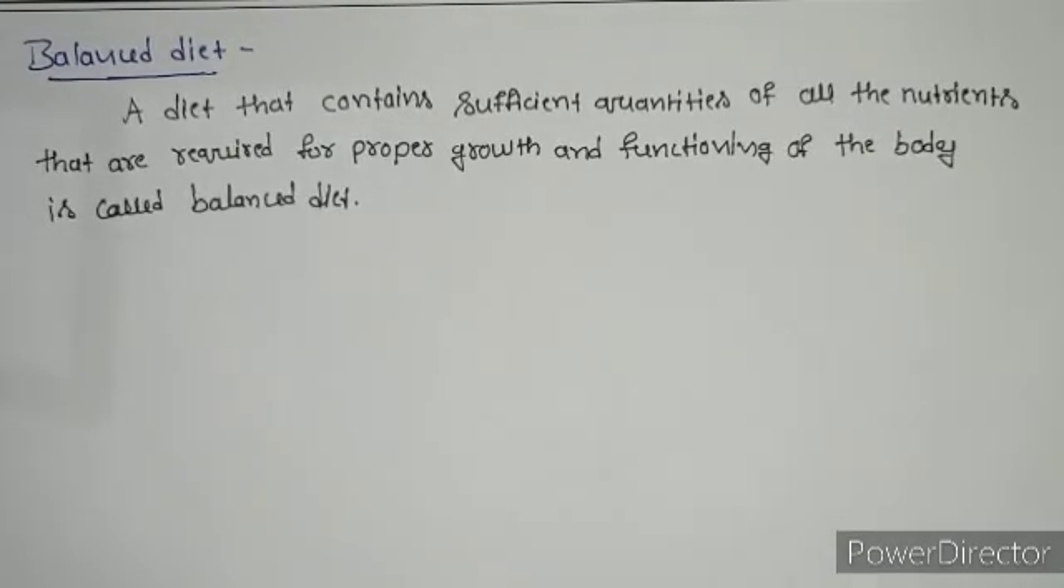Students, next we are going to know about balanced diet. So different food items contain different nutrients. To get all the nutrients that are necessary for our body, we have to eat a variety of food items. A diet that contains sufficient quantities of all the nutrients that are required for proper growth and functioning of the body is called as a balanced diet.